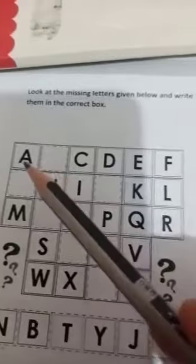Now second question. Look at the missing letters given below and write them in the correct box. Here we will do this. You have seen the missing letters in the first question, and here you have the letters here, let's see. A, and I...